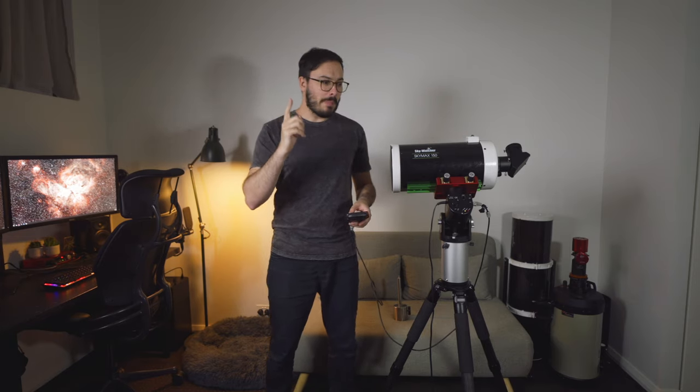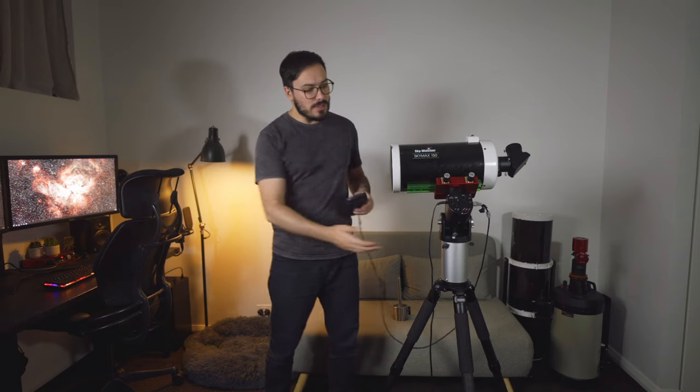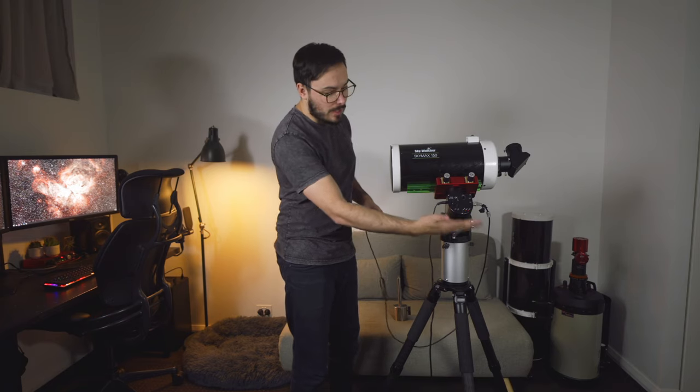So to demonstrate back driving what I'm going to do is I'm going to slew the telescope so that it's pointing nearly straight up towards the meridian and then I'm going to completely power down the mount. And because this telescope mount has no counterweight on it, there is nothing holding on the other side, you're going to see what happens when gravity takes over.